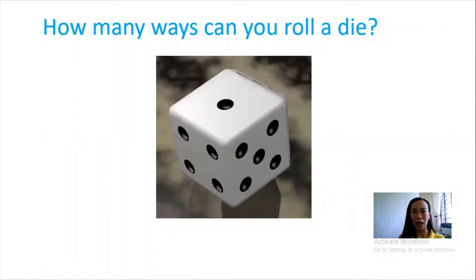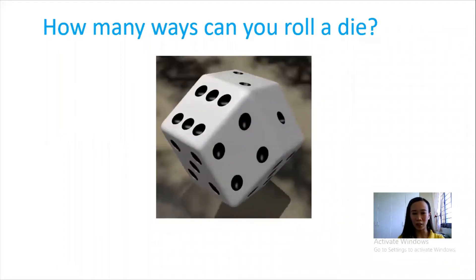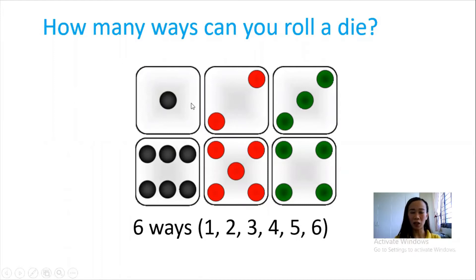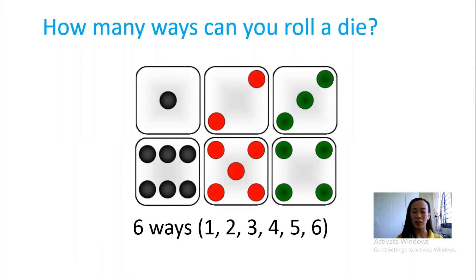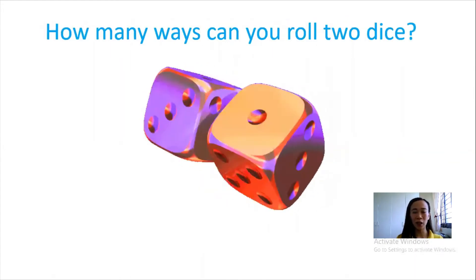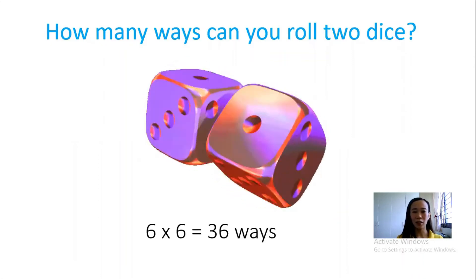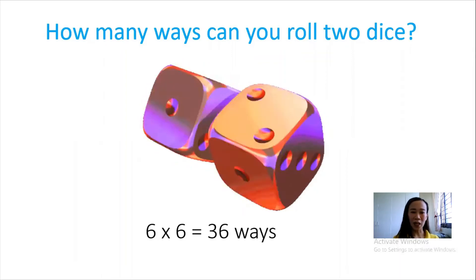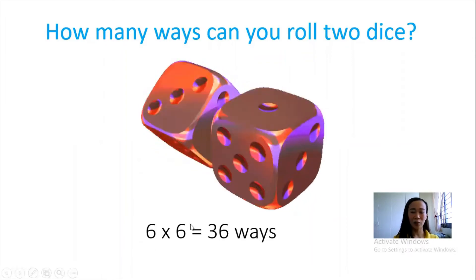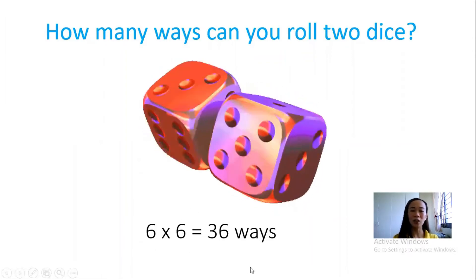How about if we have a die? How many ways can we roll a die? The first roll could be one, second could be two, third could be three, fourth could be four, fifth could be five, and the sixth roll could be six. Is there a possibility that when we roll a die, a number seven will occur? I don't think so. The total number of ways in rolling a die is six ways. How about if we have two dice? How many ways can we roll two dice? Our answer should be 36 ways — that is, the first die has six ways, the second die has another six ways, giving 36 ways.